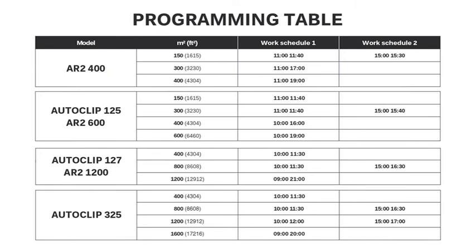To optimize working schedules 1 and 2 for the robot to effectively take care of your lawn, you should consider: the dimensions of your lawn in square meters, the complexity and shape of your lawn, and the type of grass. Indicative intervals for a medium-complexity lawn of average dimensions in square meters are shown in the table that follows.